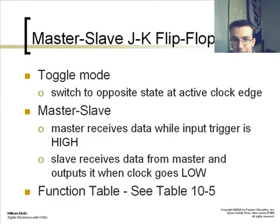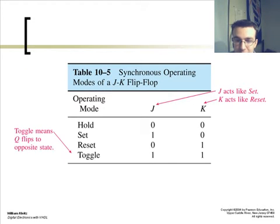The next type of flip-flop to discuss is the master-slave JK flip-flop. The JK flip-flop has a toggle mode which switches to the opposite state at active clock edges. The master receives data while the input trigger is high and the slave receives data from master and outputs it when clock goes low. This is the function table for that chip.